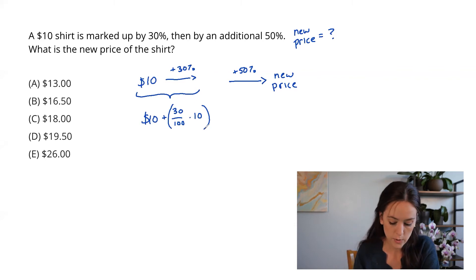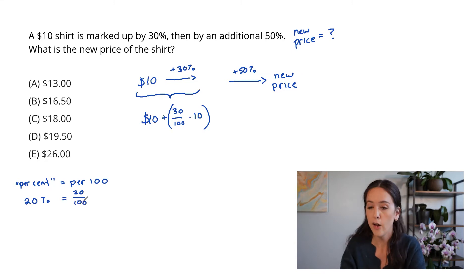Now, the reason I wrote 30% just like that is because percent literally means per 100. So for example, if you have 20%, you can write that like 20 out of 100, and so on.